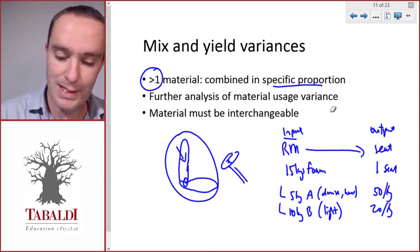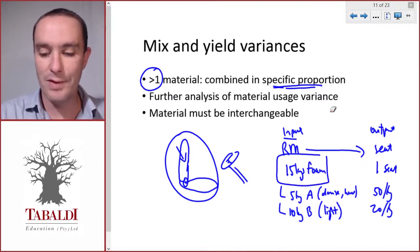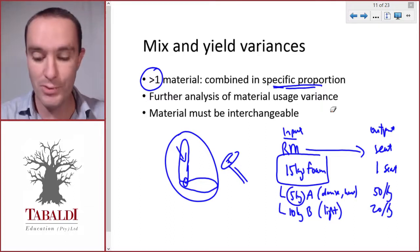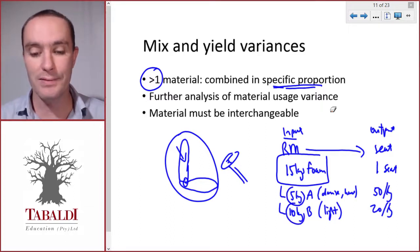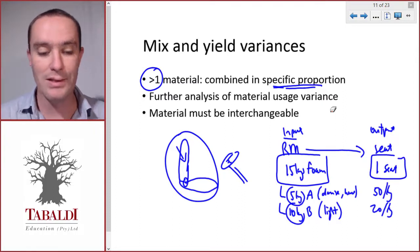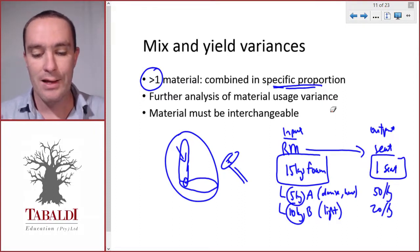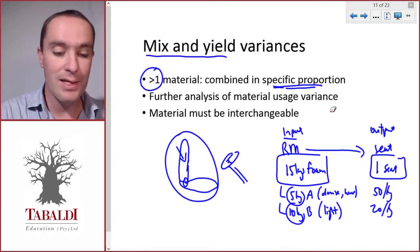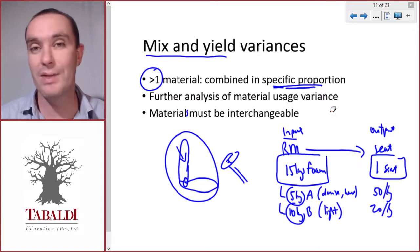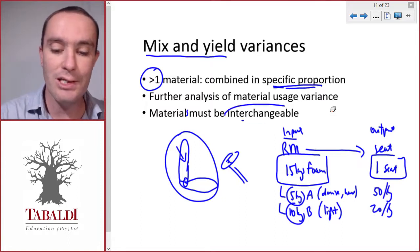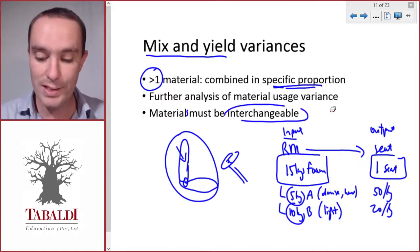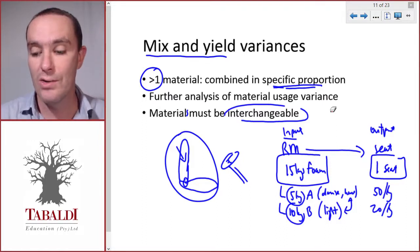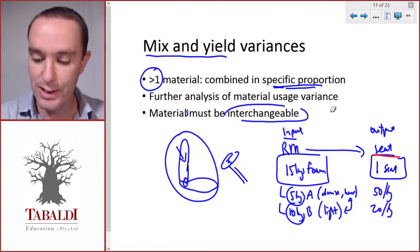So this is our input, and the fixed proportions are: for every 5 kilograms of foam type A, we use 10 kilograms of foam type B, and that will give us an output of one seat. Another condition for us to be able to calculate the mix and yield variance is that the materials used in fixed proportions must be interchangeable. That means we must be able to substitute one material with the other but still get the same output, still get the seat.